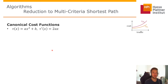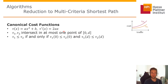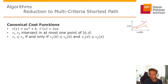This depends on your cost function on the graph. I will talk about canonical cost functions — second order polynomials of the form ax² + b. For two cost functions of this type, they intersect in at most one point in the interval from 0 to D. Therefore, one function dominates another only if it dominates at the beginning and at the end.